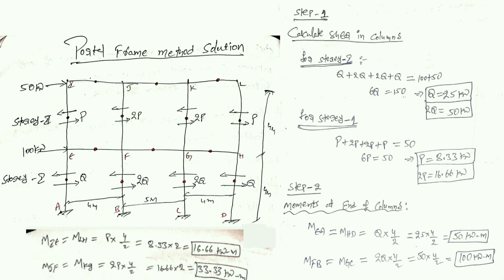Coming to the calculations: external columns carry shear p in story 2 and shear q in story 1, while internal columns carry twice those values. In Step 1, for story 1, total shear equilibrium gives 6q = 150 kilo-Newtons (100 + 50), so q = 25 kilo-Newtons and the internal shear 2q = 50 kilo-Newtons. For story 2, 6p = 50 kilo-Newtons, giving the values of p and 2p for that story's columns.